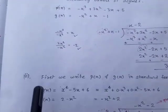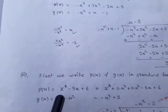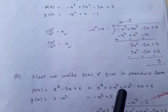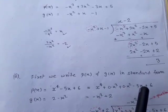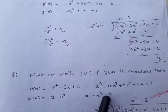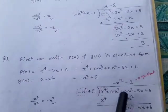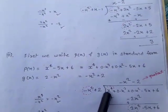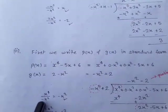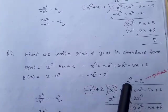Next problem: P(x) = x⁴ − 5x + 6. Written in decreasing order: x⁴ + 0·x³ + 0·x² − 5x + 6. G(x) = −x² + 2. Dividing x⁴ by −x² we get −x², so the first quotient term is −x². Multiplying −x² by (−x² + 2) gives x⁴ − 2x².